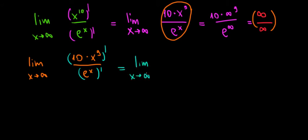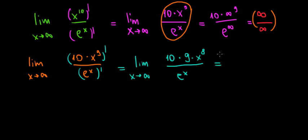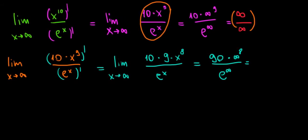Limit as x approaches infinity. The derivative of 10 times x to the power of 9: 10 is a constant, and using the power rule on x to the power of 9 gives 9 times x to the power of 8. So we get 90 times x to the power of 8. e to the power of x derivative is e to the power of x. Substituting infinity: 90 times infinity to the power of 8 divided by e to the power of infinity — still infinity over infinity, so undefined. We can see a trend here.